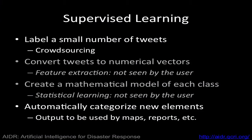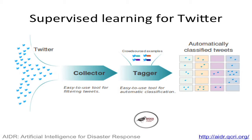In supervised learning, you take a small set of examples that have human-provided labels for them, and you do some machinery, and in the end what you obtain is a classifier that automatically can sort out elements into different categories. In the case of Twitter, we do this through a couple of modules — a collector and a tagger. The collector gets data from Twitter, the tagger gets training examples, uses Weka, and classifies things automatically.